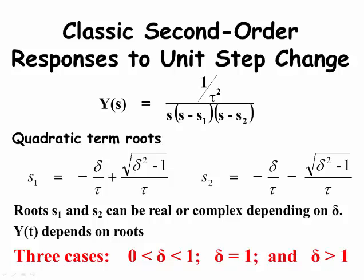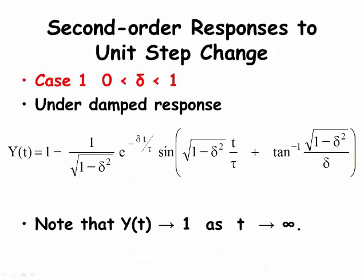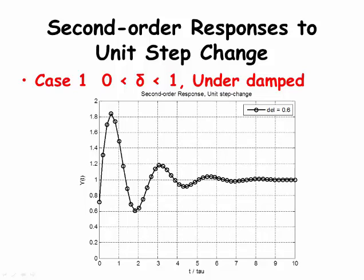The first case, when delta is between 0 and 1, is called the underdamped response. The equation for y(t) is given here. Applying the final value theorem, y(t) approaches 1 as t approaches infinity. An underdamped response overshoots the final value and commonly has multiple oscillations around the final long-term value of 1. A well-behaved underdamped response will settle down fairly quickly, and such responses are considered good responses.